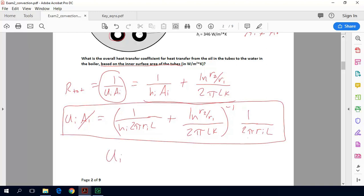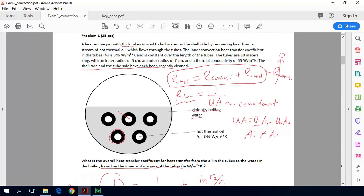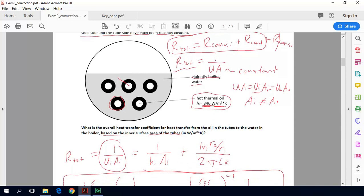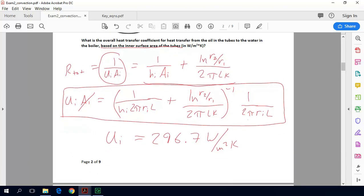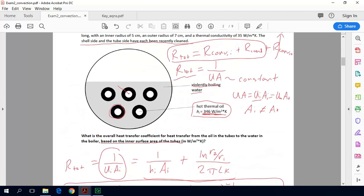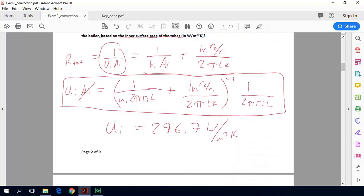We end up getting U_i equals 296.7 watts per square meter per kelvin. Some other important things to note: our overall heat transfer coefficient is always going to be lower than either of the heat transfer coefficients, because we're adding extra thermal resistance. The more things you add, the more things for heat to propagate through, the lower that number will get. Our h_i is 346 and our U_i is about 297, so it is a little bit lower because we added this extra thermal resistance of the tube. I obviously skipped all the plugging and chugging part; I'll leave that for you to do on your own.